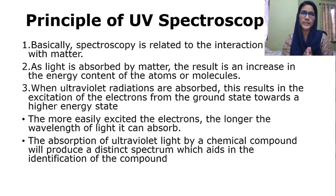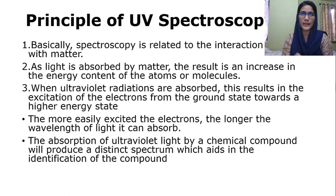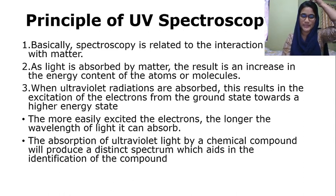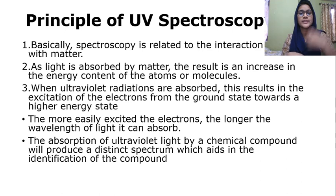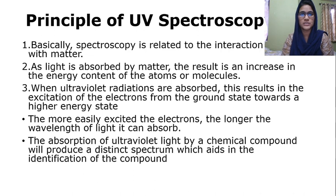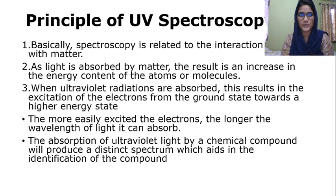Spectroscopy is the study of interaction of light with matter. Here, we will use any radiation of light. If you are using UV visible light, then it is termed as UV Visible Spectroscopy. If you are using IR radiation of light, then it is IR spectroscopy.